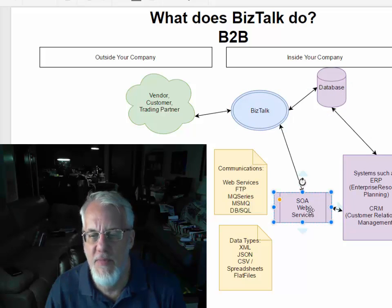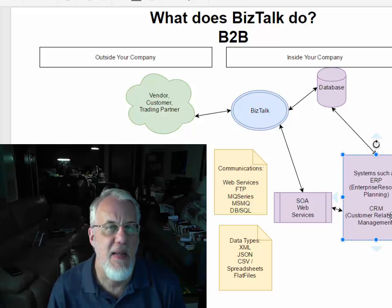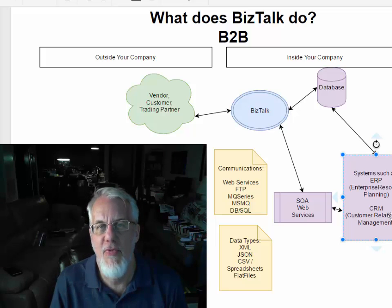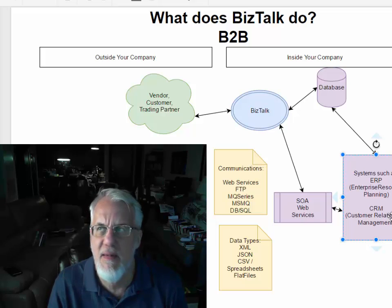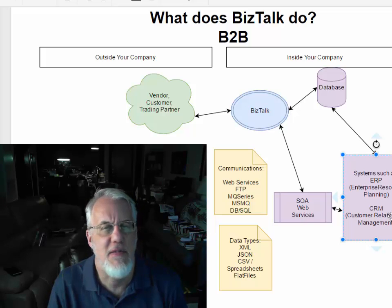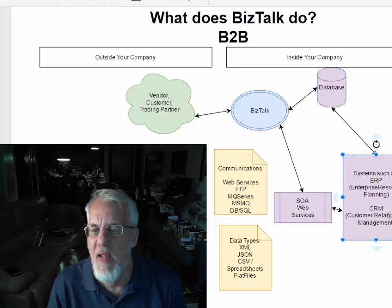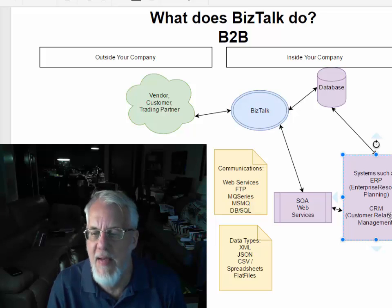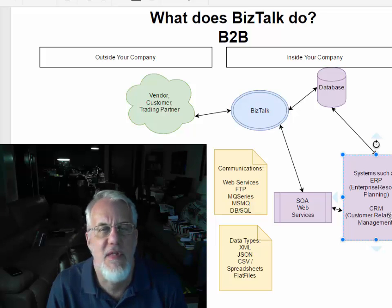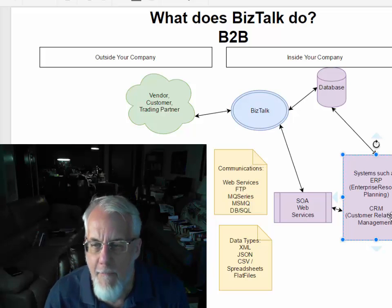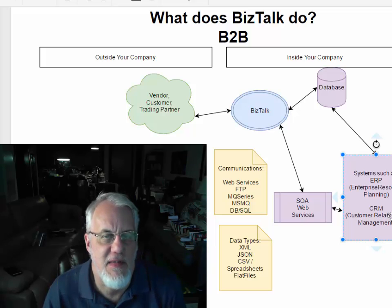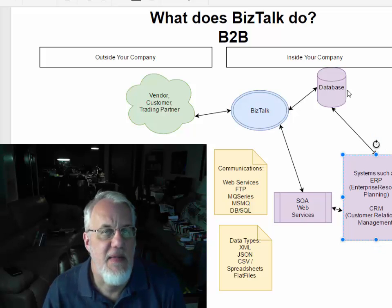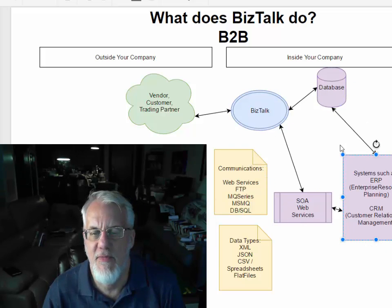BizTalk will then talk to things inside your company. You may be an SOA company — service-oriented architecture — and you may have web services that talk to your internal systems. Those internal systems may be in-house systems you developed yourself, or third-party COTS products, best-of-breed products. You may have SAP, ERP systems, enterprise resource planning systems, your CRM, customer relationship management systems. Basically, BizTalk can somehow talk to it, and it also has special interfaces, for instance, to SAP. You can also read and write to databases from BizTalk.